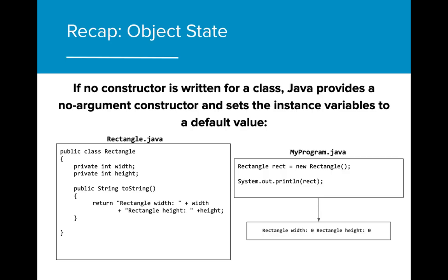When we create a new rectangle object in myProgram.java, we are able to use a no-argument constructor, even though the class does not have one written. When we print out the value of width and height after constructing a new rectangle object, we can see that the value of width and height have been initialized to zero by Java.